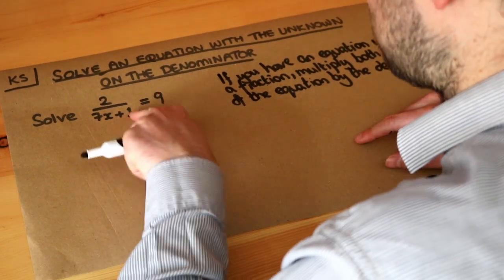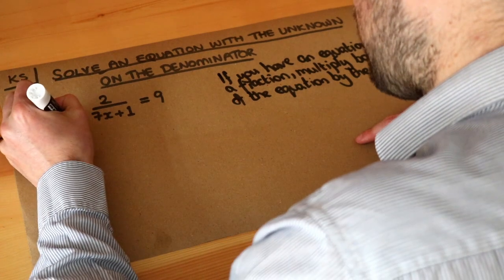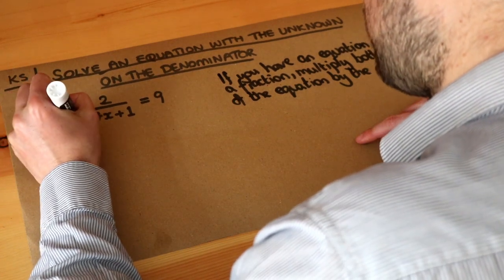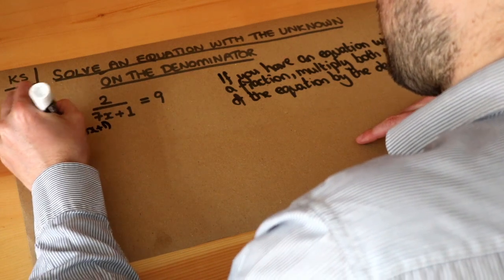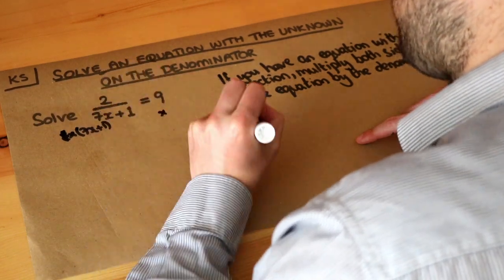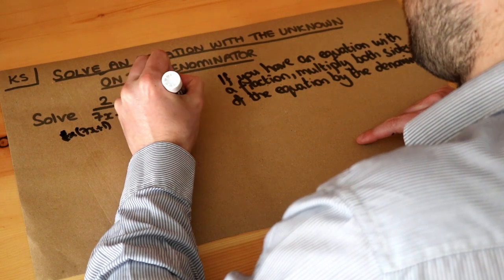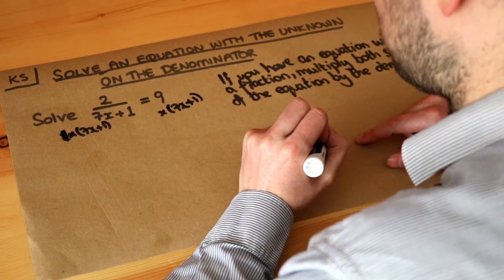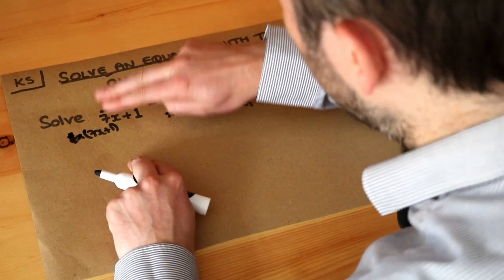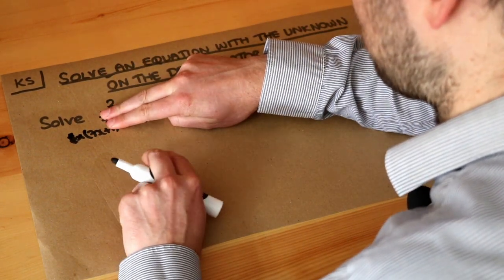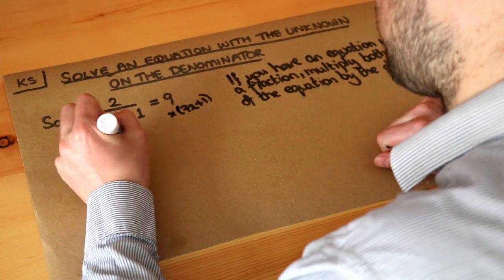So in this particular case the denominator here is 7x plus 1, so I'm going to multiply both sides of the equation by 7x plus 1. And I'm going to multiply the right hand side also by 7x plus 1, because whatever you do to the left hand side of the equation, you need to do the same to the right hand side. Now if I times the left hand side by 7x plus 1, it just cancels out the divide by 7x plus 1, and you're just left with that 2 there.